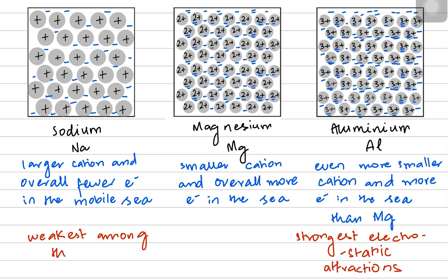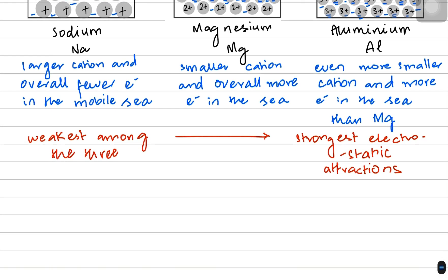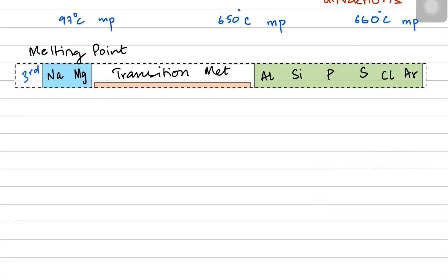Aluminium has the highest melting point while sodium has the lowest among the metals. Sodium has a melting point of around 97°C. Magnesium has a melting point of 650°C and aluminium 660°C. Across the metals, aluminium has the strongest metallic lattice and the strongest electrostatic attraction.